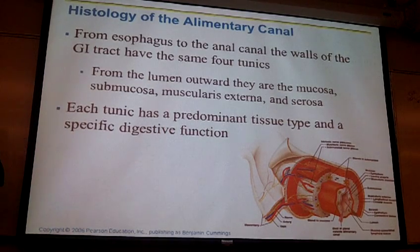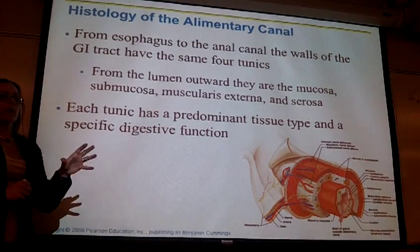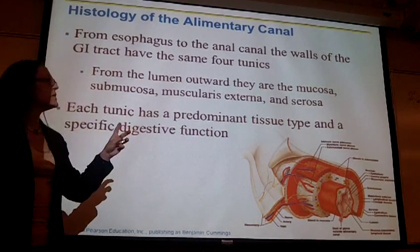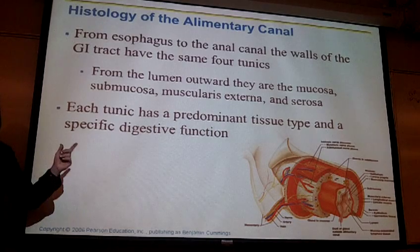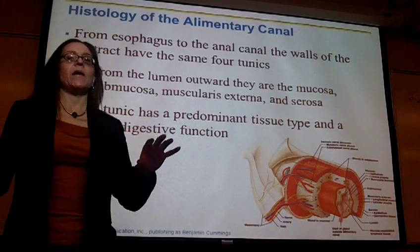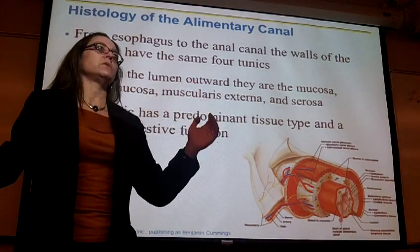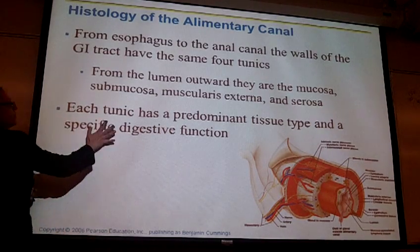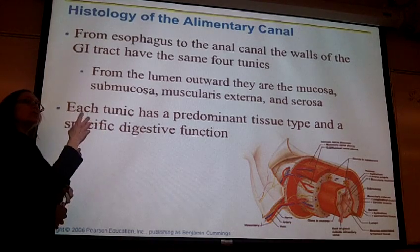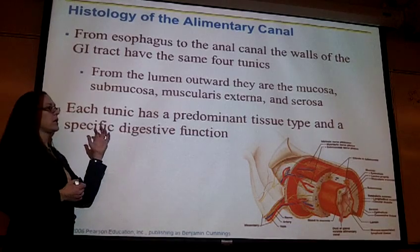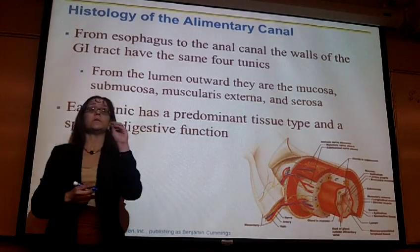When doing histology, whatever slide you're looking at — esophagus, stomach, small intestine — you should be able to see these four tunics in every slide. Each tunic will have certain types of tissue that help you identify it, and there will be certain adaptations that allow that area to perform particular functions. Right now we'll talk about these tunics in general.